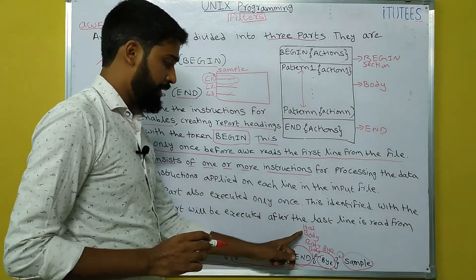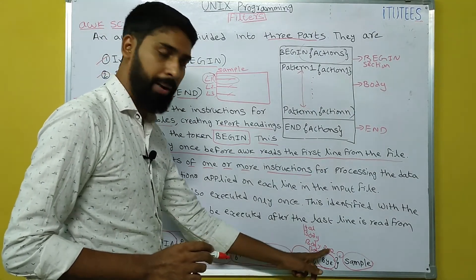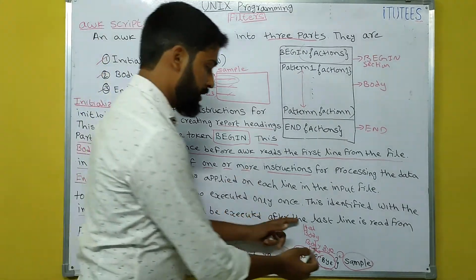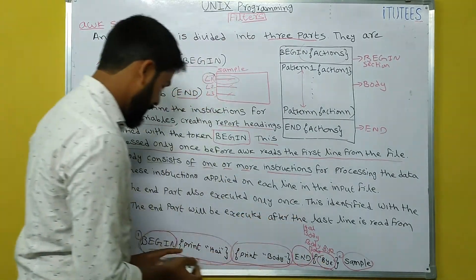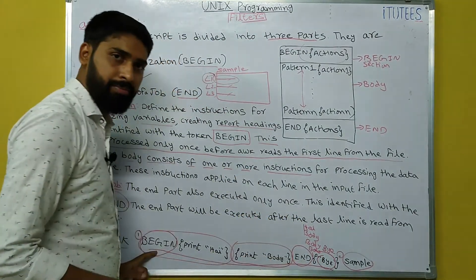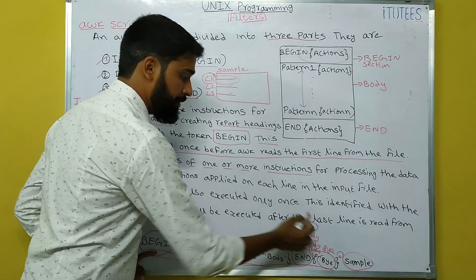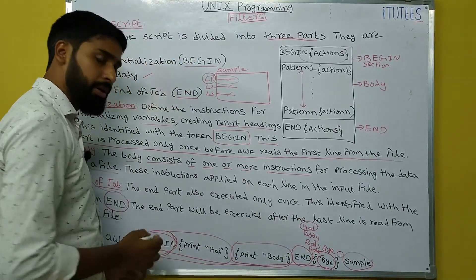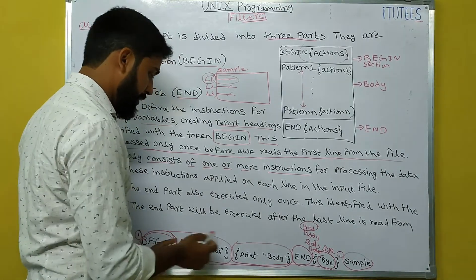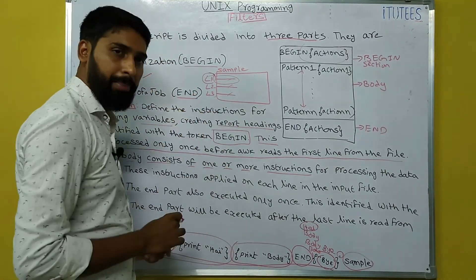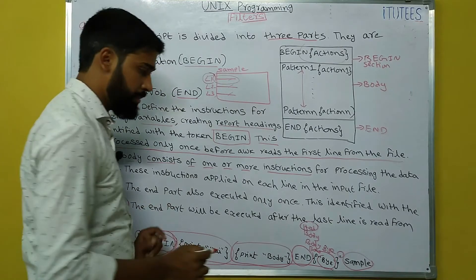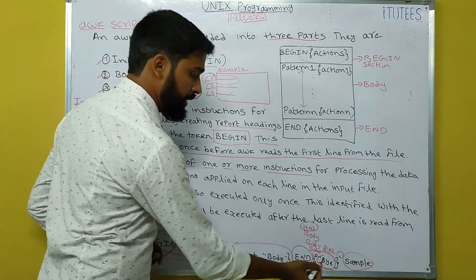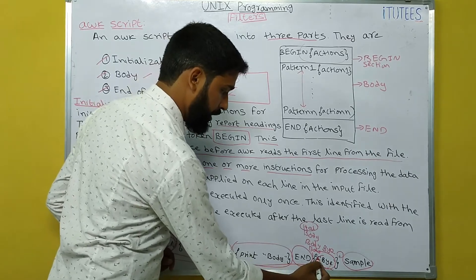The output is: hi, body, body, body, bye. 'Hi' and 'bye' are printed only once because they are in the BEGIN and END sections. 'Hi' is printed first because it is written in the BEGIN token, which executes before reading the first line. Similarly, after reading the last line in the input file, the END section prints 'bye'.